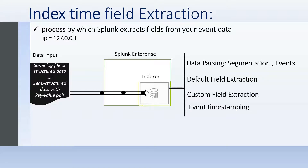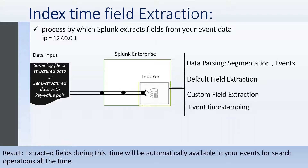During the index time process, certain operations take place. The main processes are data parsing, segmentation, identifying events, default field extraction, and some user-defined field extraction also happens at this stage. We will cover custom field extraction in an upcoming video. Time stamping also takes place at this stage. As a result of this process, the fields that Splunk extracts are available in your events at all times.